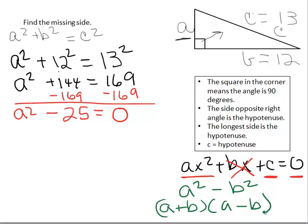A plus B times A minus B. When you multiply those two factors together, the middle term cancels out and you're left with that. So I can look up here and there's a perfect square and there's a perfect square. So this will work out as A plus the square root of 25 is 5 times A minus 5 equals 0.